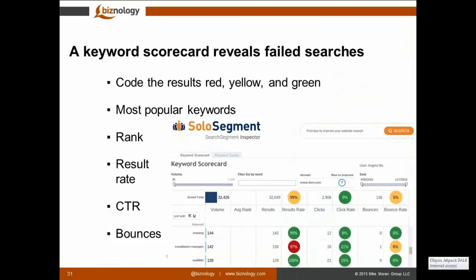Finding answers in your web analytics system can be fairly difficult. One solution is a keyword scorecard, which puts all the information in one place. It tells you whether your search results are good, bad, or indifferent; what your most popular keywords are; which ones have good results; click-through rates; whether people are bouncing back to the search results page after clicking — all indications that search is failing. The goal is to reduce those failed searches as much as possible. This is how you keep score.